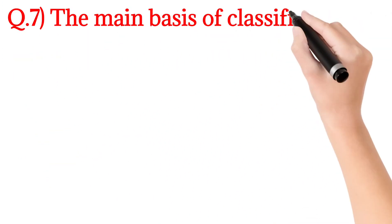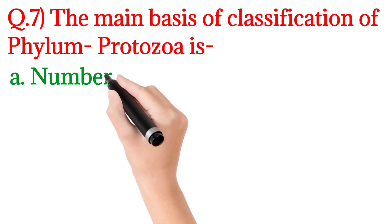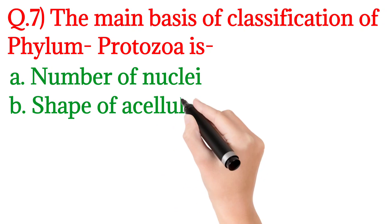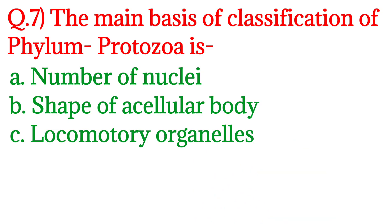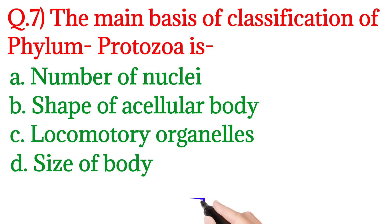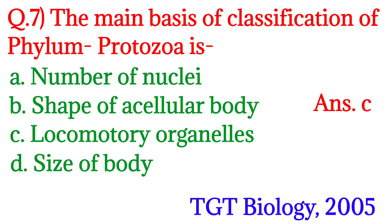Question 7: The main basis of classification of phylum Protozoa is? Option A: Number of nuclei, Option B: Shape of the cellular body, Option C: Locomotory organelles, Option D: Size of body. This question was asked in TGT Biology 2005. The answer is Option C: Locomotory organelles.